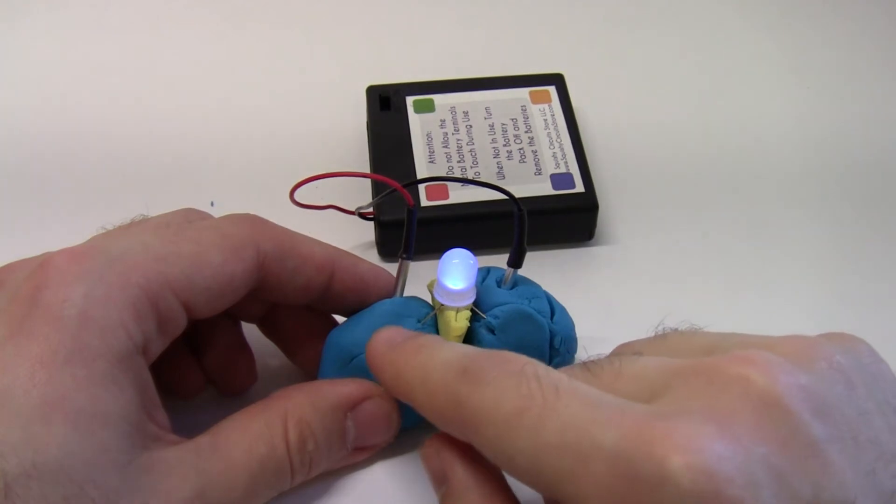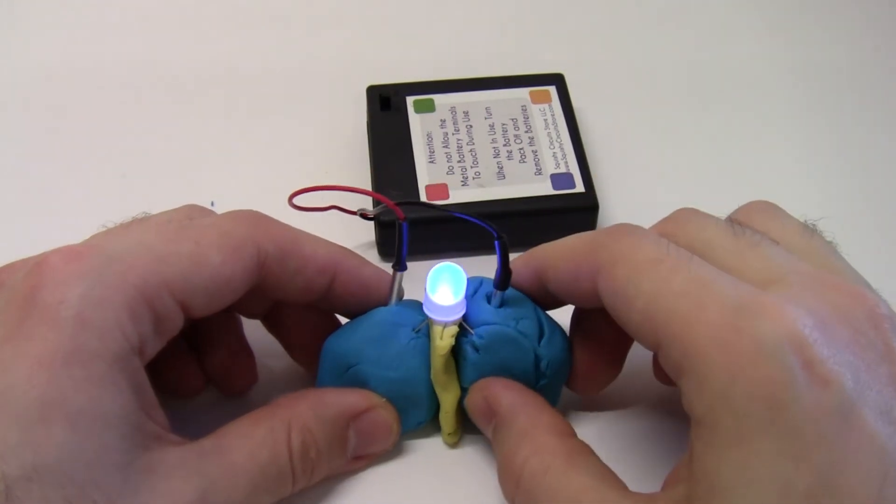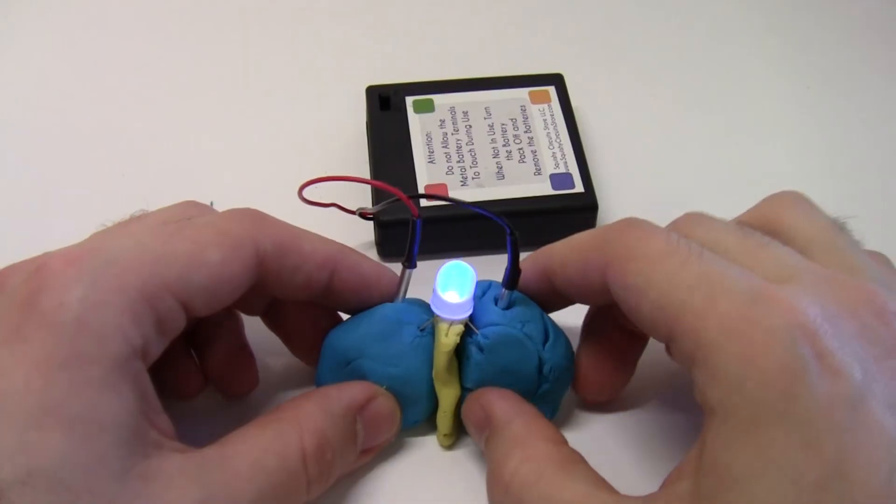So this is an important trick to remember if you want to build a more complicated sculpture. You have to use modeling clay to insulate the two sides of the LED from each other and prevent creating a short circuit.